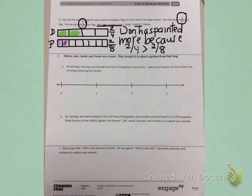Number five. Maria, Juan, Jacob, and Yunmi are a team. Their project is to plant a garden three feet long. A. On Monday, the team partitioned each foot of the garden into fourths. Label every fraction on the number line, including renaming the holes.